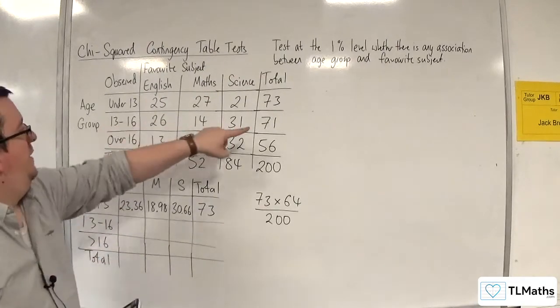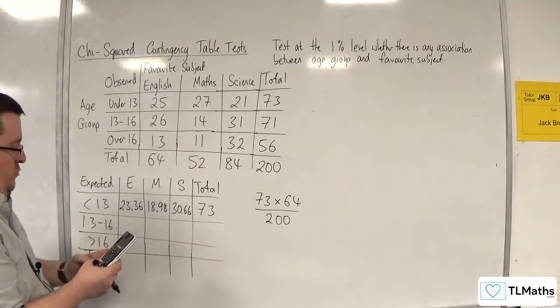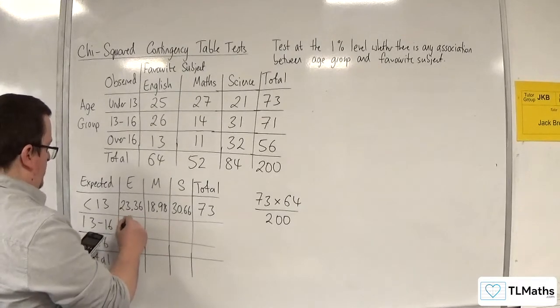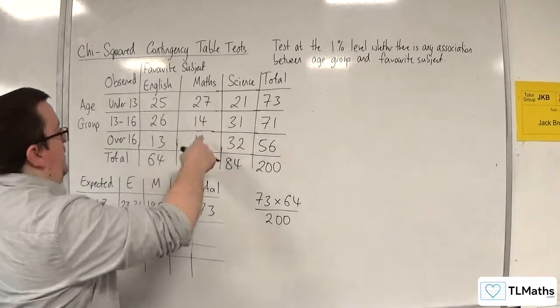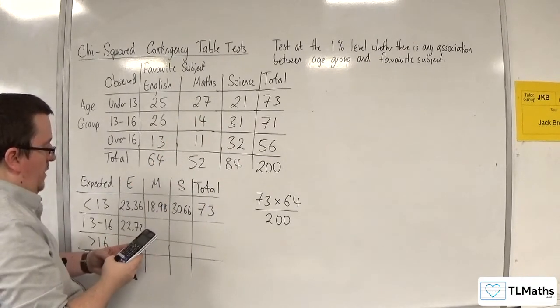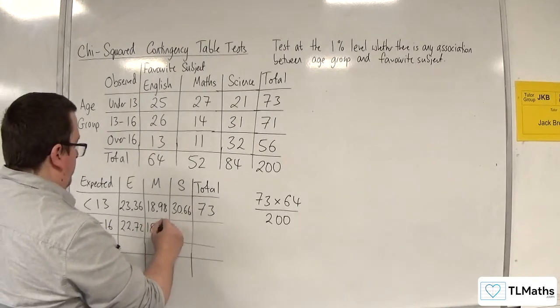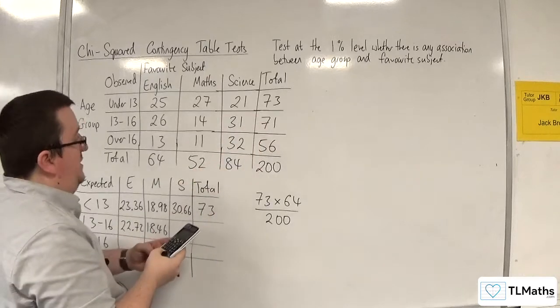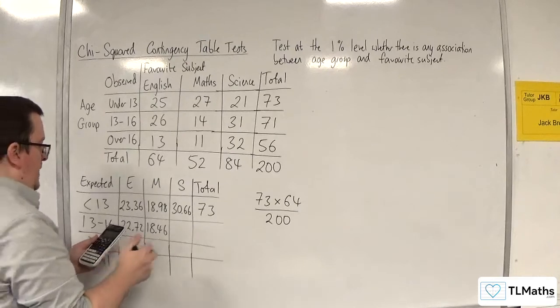Right, this one next, which will be 71 times 64 divided by 200. So 22.72. Then for this value, 71 times 52 divided by 200. So 18.46. Then this one will be 71 times 84 divided by 200, which will be 29.82.